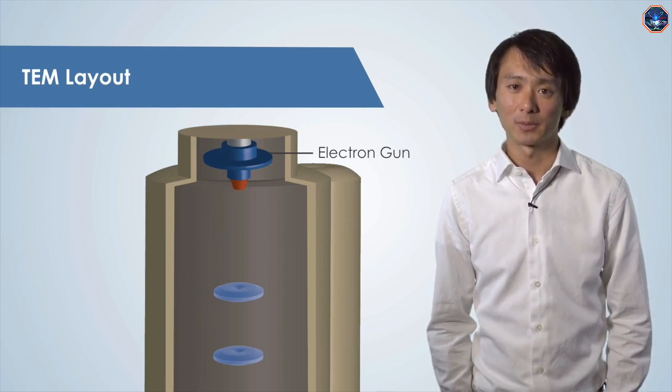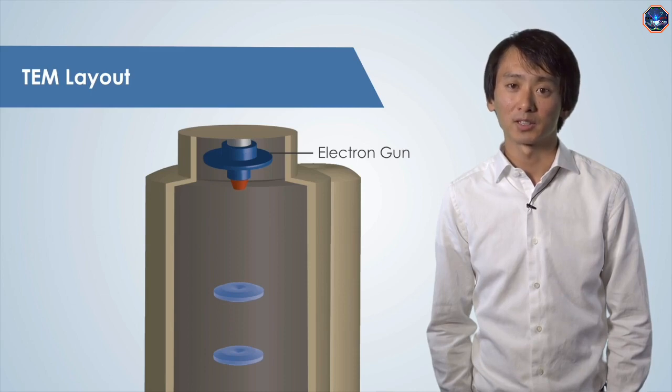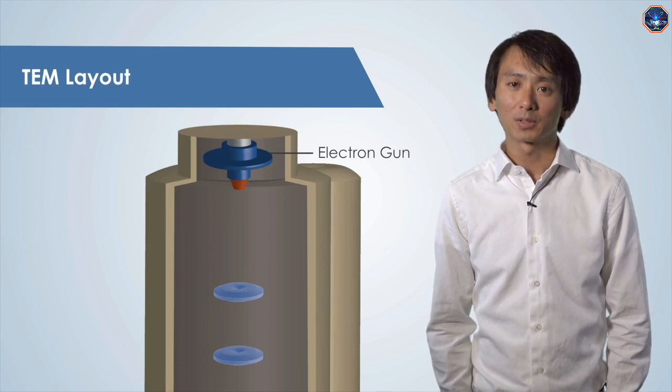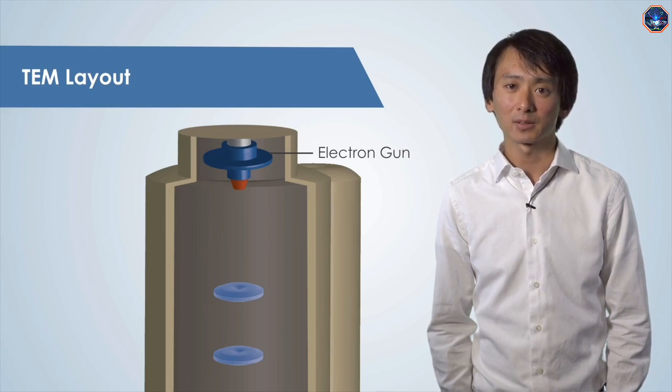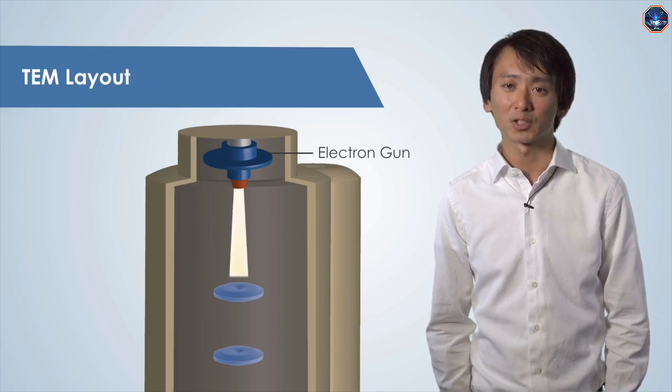Field emission guns use a sharp, typically tungsten tip as an emitter with an applied voltage to extract electrons. This emitter generates more electrons than traditional thermionic emission guns. Both emission types have an anode located below the filament. The electrons accelerate from the cathode toward the anode to create an electron beam.